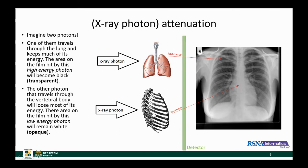If you picture another photon that travels through, say, the vertebral bodies, ribs, sternum, or heart, that photon loses a lot of its energy. When it arrives at the detector, the color represented is somewhere near true white. In radiology terms, we call these opaque areas, or if it's a lesion, opaque lesions.